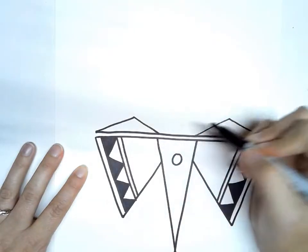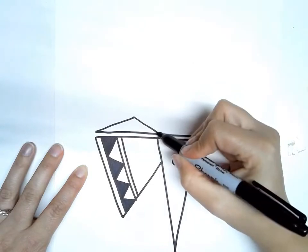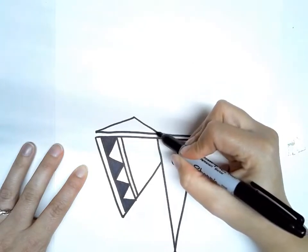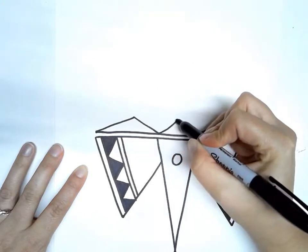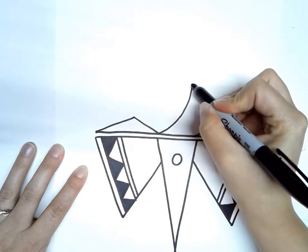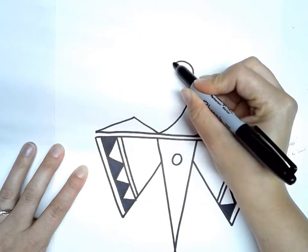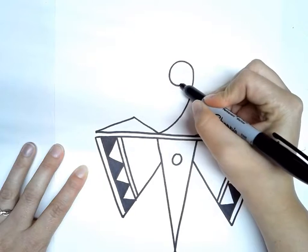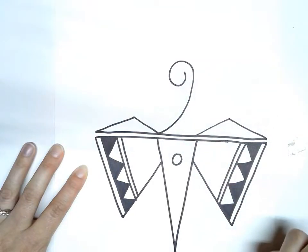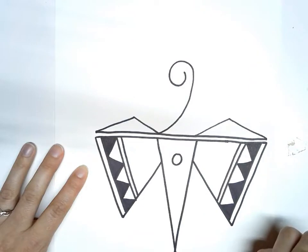So next we are going to draw kind of a swirl. So it's going to start where this triangle ended. And it's going to come up and go around in a circle and back in like that. It's a little swirl design there.